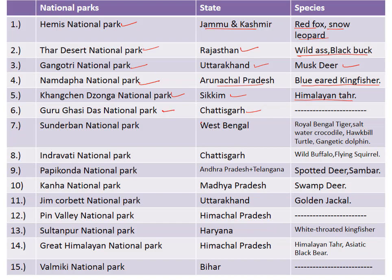Sundarbans National Park is situated in the state of West Bengal and is famous for the Royal Bengal tiger, saltwater crocodile, hawksbill turtle, and gangetic dolphins. Gangetic dolphins are endemic to the Ganga river, which is why Sundarbans National Park is a habitat for them.